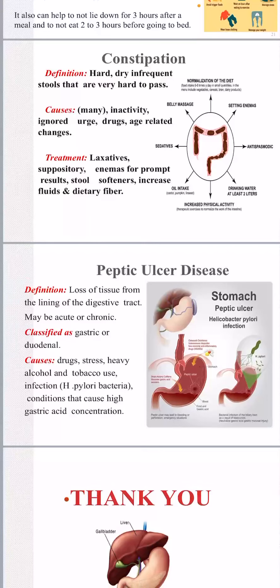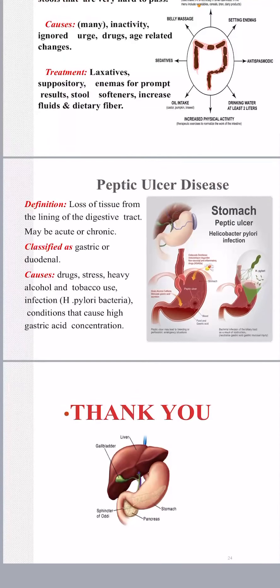The final disorder is peptic ulcer disease. An ulcer is loss of tissue from the lining of the digestive tract, and it may be acute (short-term) or chronic (long-term). Causes include taking drugs without enough water, stress, heavy alcohol use, and infection with H. pylori bacteria. Thank you for watching and I hope you enjoyed the session.